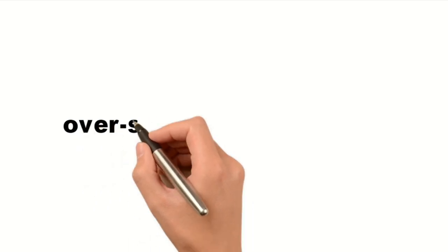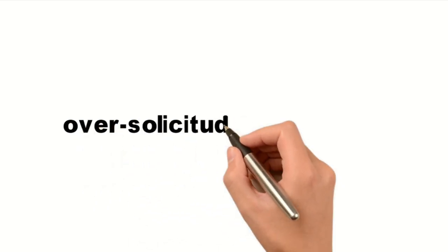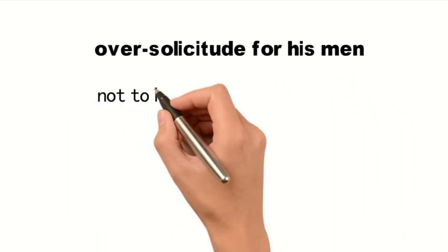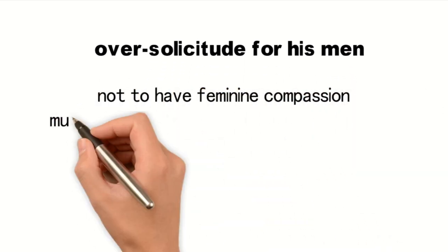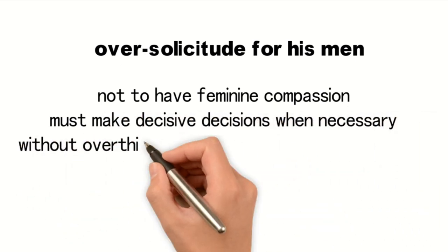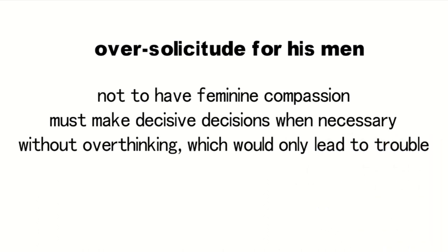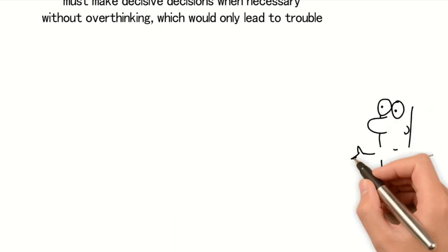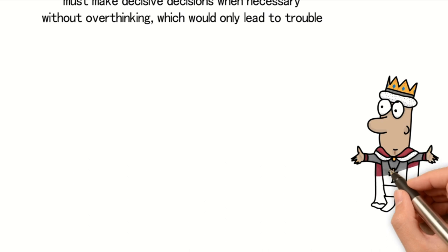Fifth danger: oversolicitude for his men, which exposes him to worry and trouble. Sun Tzu warns us not to have feminine compassion. As a leader, you must make decisive decisions when necessary, without overthinking, which would only lead to trouble.